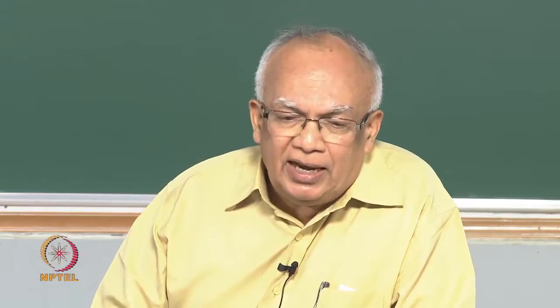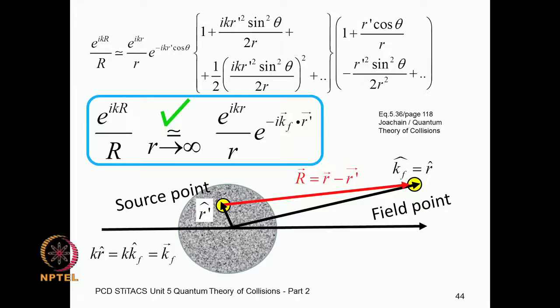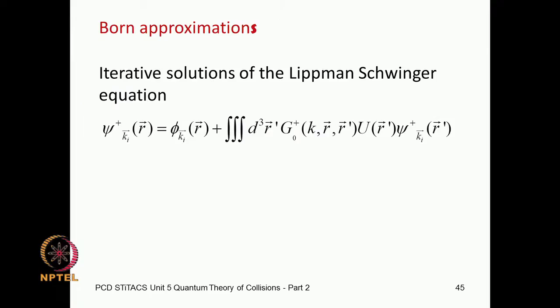We went through this to get an estimate of e to the ikr over r, which we used in the previous class, and then we put it into the Lippmann-Schwinger equation. This is where we begin our discussion for today's class.